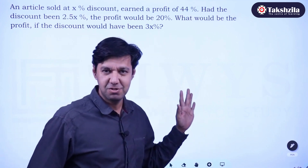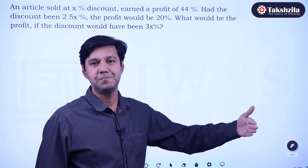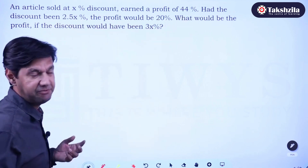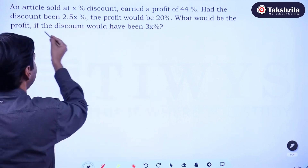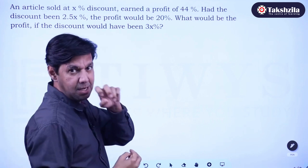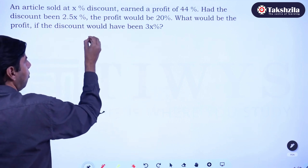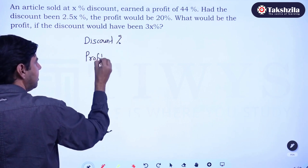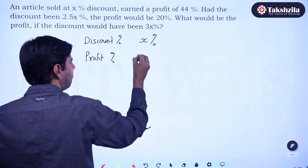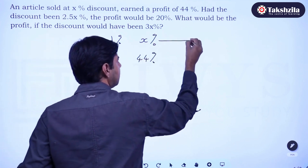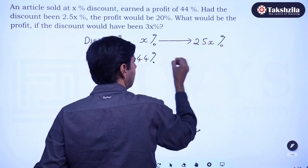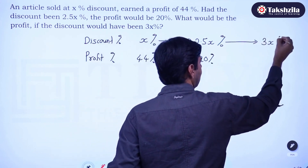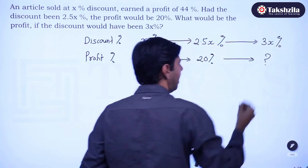There's an interesting doubt about a shortcut and the logic behind it. The question is: when an article is sold at X percent discount, there's a profit of 44%. If the discount is 2.5X, the profit is 20%. What would be the profit if the discount is 3X? As discount increases, profit decreases — so as expected, at 2.5X discount the profit is less at 20%. What will it be at 3X?